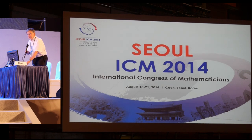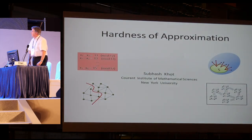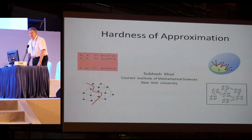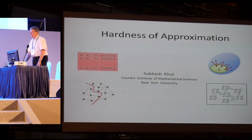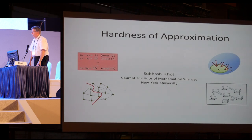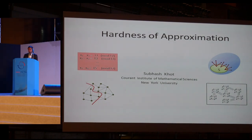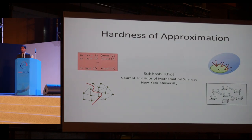It's time now to start the lecture by Nevanlinna Prize winner Subhash Khot. The role of the chair is easy because the prize winner and his work have been introduced at the opening ceremony and the laudation just before this talk. The next speaker is Subhash Khot, speaking about hardness of approximation. Khot thanks the International Mathematical Union for the award and Sanjeev for his nice introduction. His talk will be an expanded version with more details and some directions for future research.